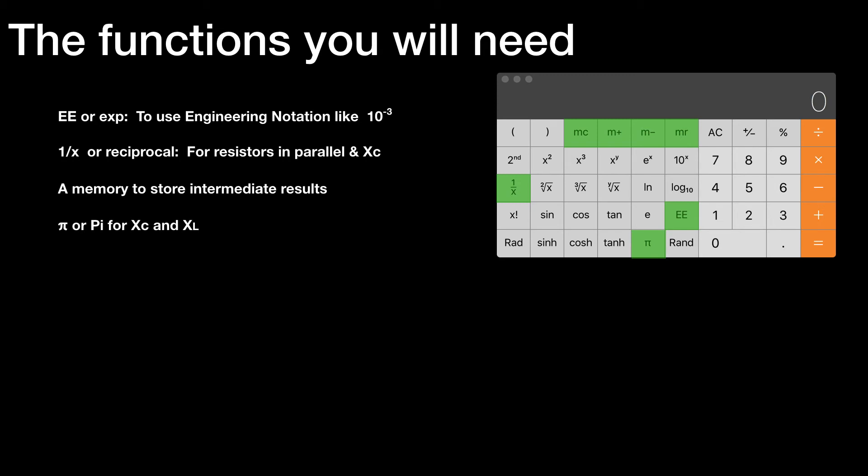Pi, for Xc and XL - not absolutely necessary. You could type in 3.141 if you can memorize it, but it's so much easier if you have it on a single button.